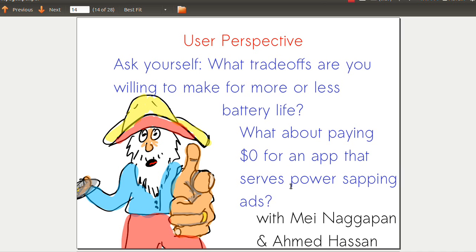You're responsible as a user, but you can make other trade-offs. You can trade off usability for more battery life, or perhaps trade off money. What if you want to use software for free but are willing to pay with your battery? You're willing to serve power-sapping ads. There are many options - some use more power in order to get something for free.